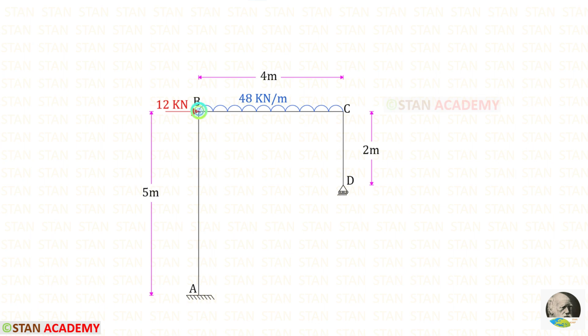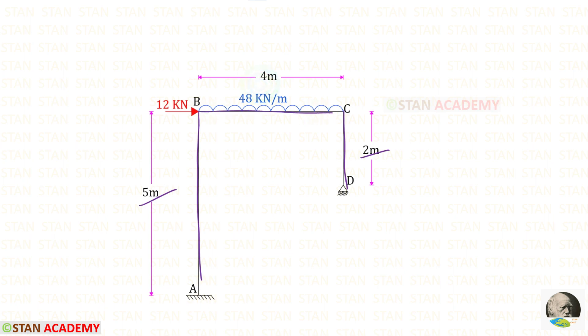In the joint B there is a nodal point load of 12 kN acting towards the right side. The height of column AB is 5 meters, the height of CD is 2 meters, and the length of BC is 4 meters.